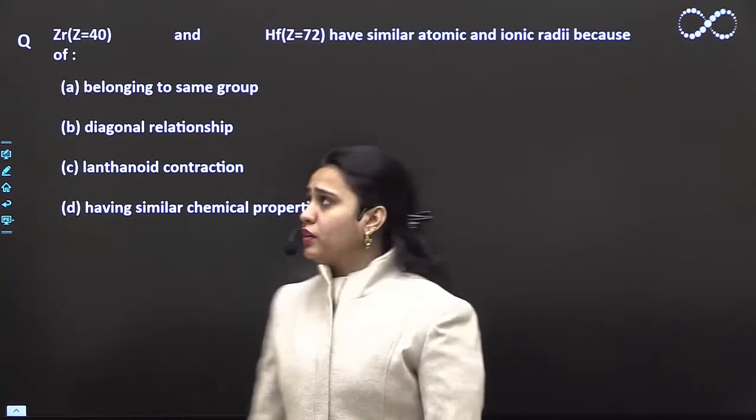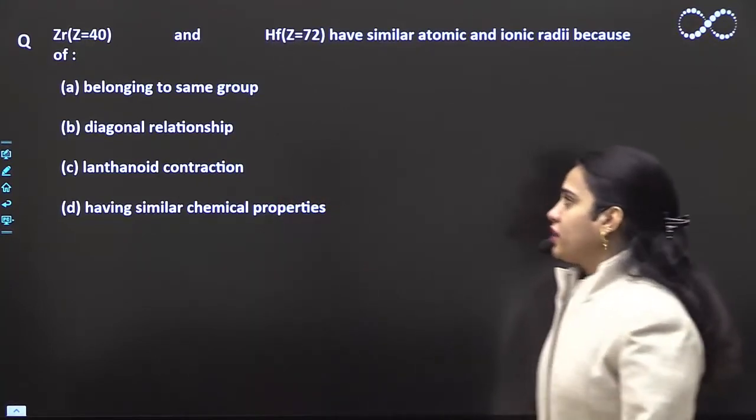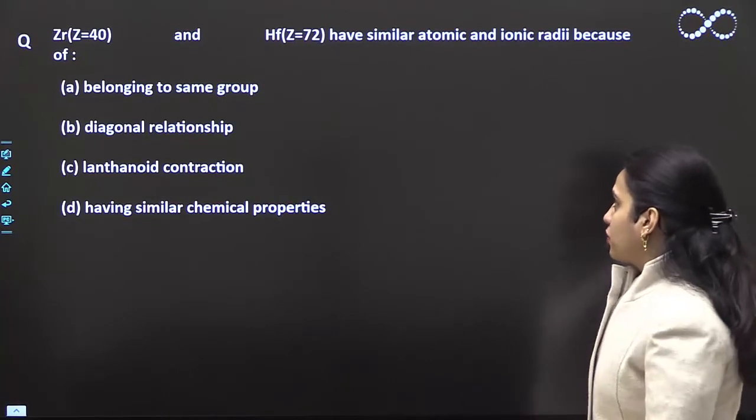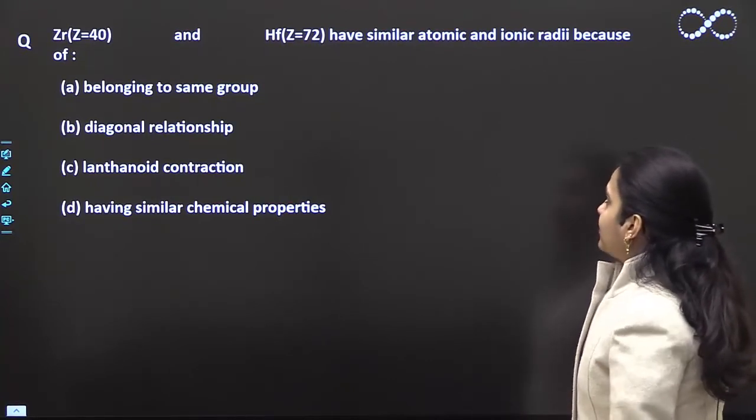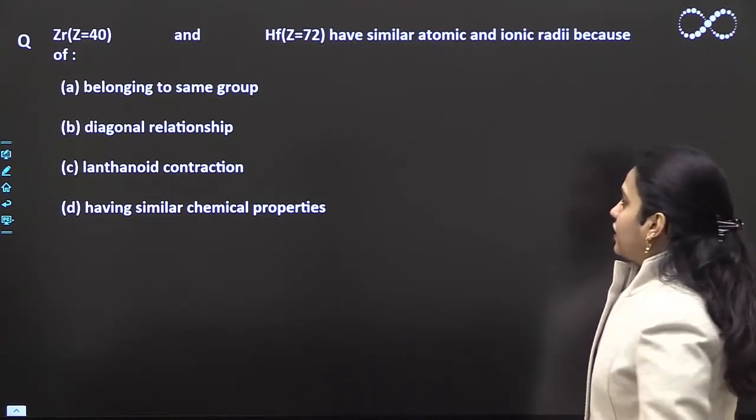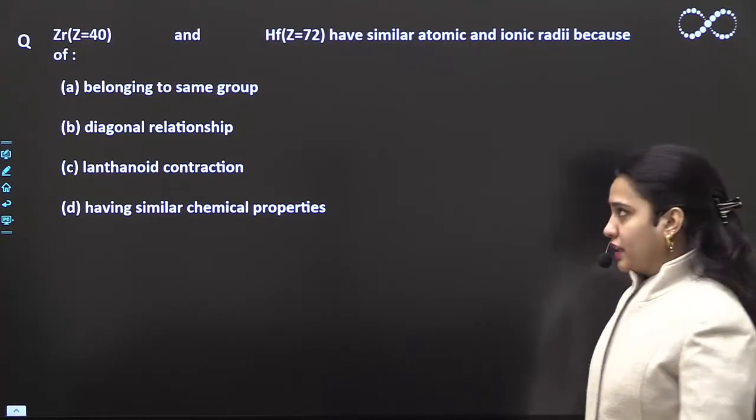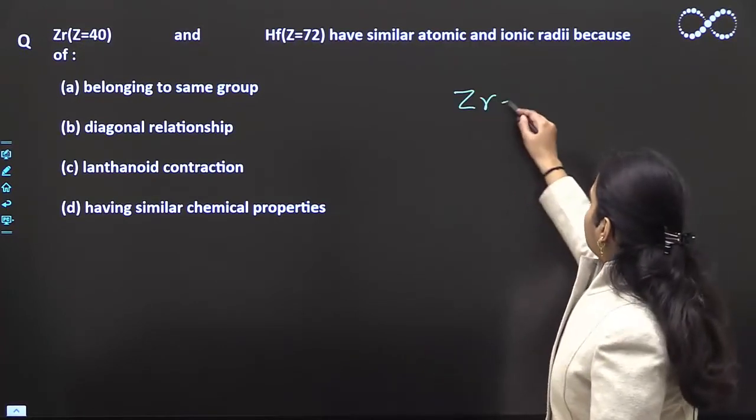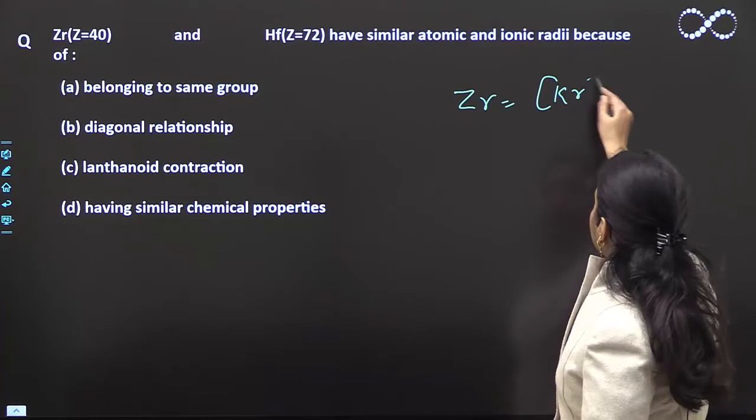Hello students, in this question you are asked that zirconium (atomic number 40) and hafnium (atomic number 72) have similar atomic and ionic radii because of which of the following factors. So zirconium electronic configuration...